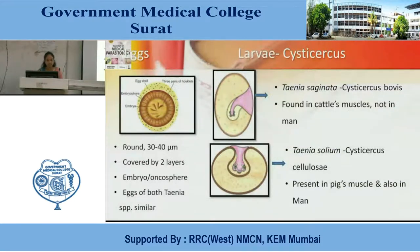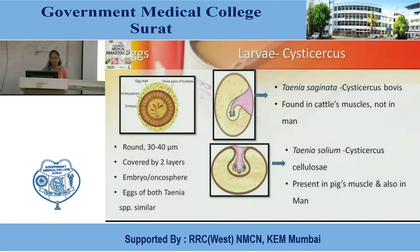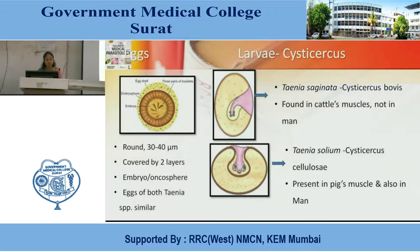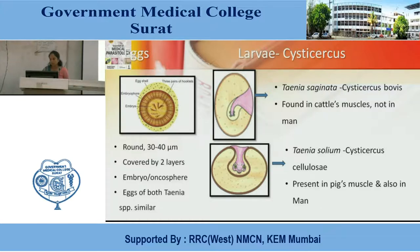Eggs of Taenia species: the figure shows three pairs of hooklets in the embryo. The embryo is covered by the embryophore, which is covered by the egg shell — approximately 30–40 µm. Covered by two layers; the embryo or oncosphere is present. Egg species are similar between T. saginata and T. solium. Larvae — Cysticercus: Taenia saginata larva is called Cysticercus bovis, found in cattle muscles, not in man. In man it is Taenia solium larva called Cysticercus cellulosae, present in pig muscles and also in man.